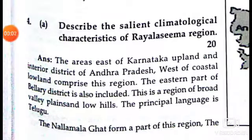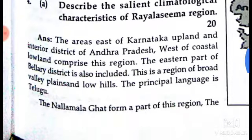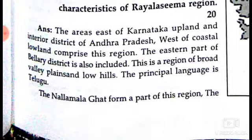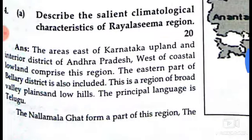Discussing the salient climatological characteristics of the Rayalaseema region. The areas east of Kurnool, half land, and interior districts, west of the coastal lowland, comprise this region. The eastern part of the valley district is also included. This is a region of broad valleys, pen plains, and low hills. Their principal language is Telugu. Nellore and Mahabubnagar formerly formed a part of this region.